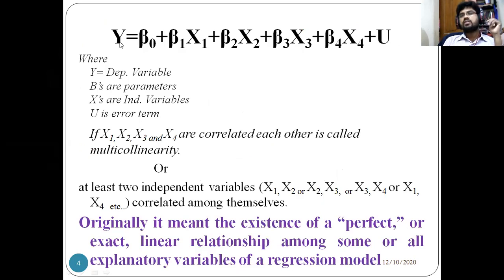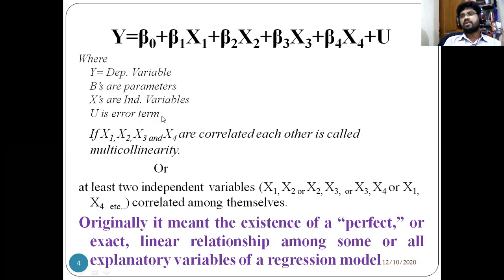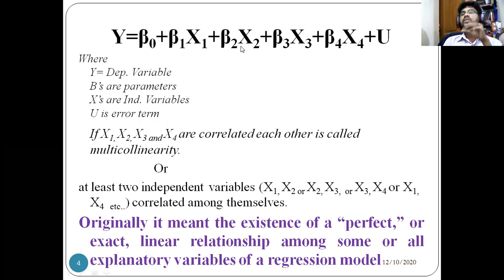Consider the equation y = β₀ + β₁x₁ + β₂x₂ + β₃x₃ + β₄x₄ + u. This is called multiple regression. Here, y is the dependent variable; β₀ is the constant; β₁, β₂, β₃ are parameters or coefficients or slopes; x₁, x₂, x₃, x₄ are the independent variables; and u is the error term, also called the random or stochastic term. Multicollinearity means if these x₁, x₂, x₃, x₄ variables are correlated with each other.